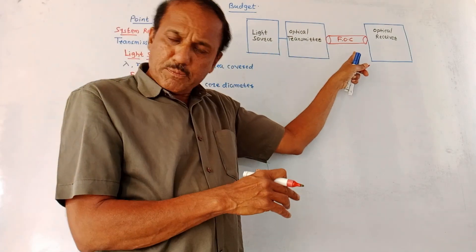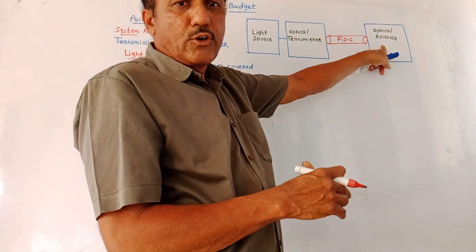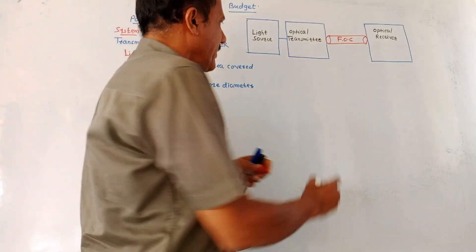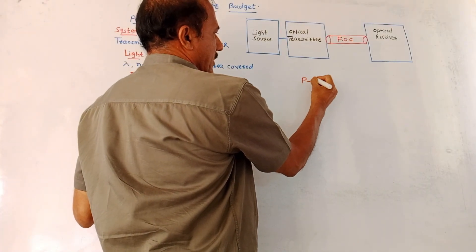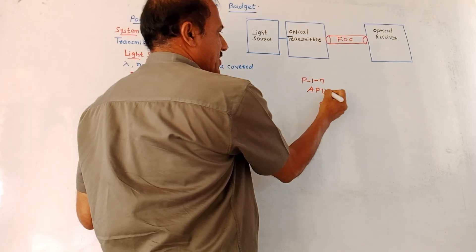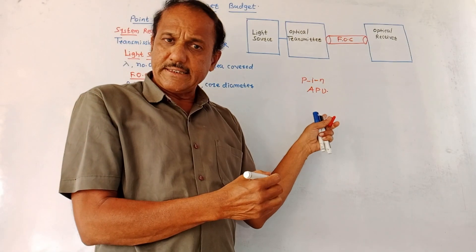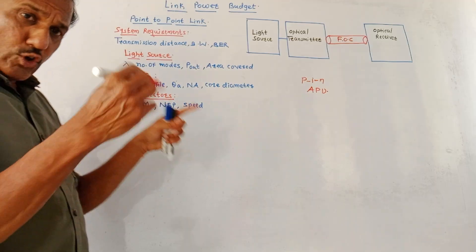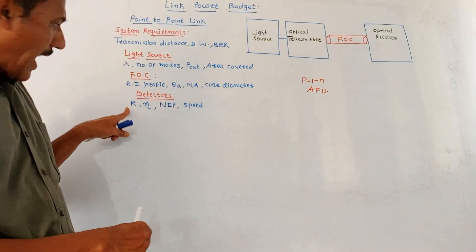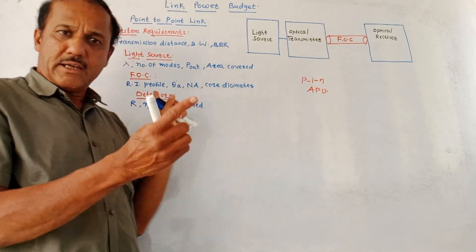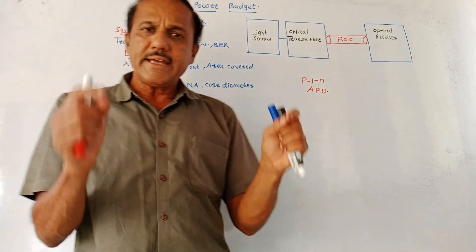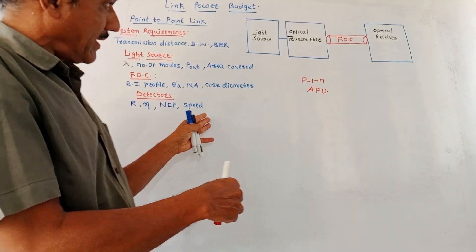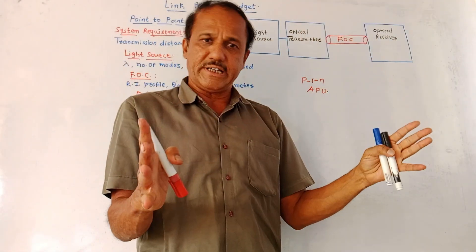When data transmits through the fiber optic cable, at the output end we use a suitable optical receiver — a photodetector. Commonly used photodetectors are the PIN photodiode or APD (avalanche photodiode). The major requirements for the optical detector depend on R (responsivity), eta (efficiency), NEP (noise equivalent power), and speed of detection.